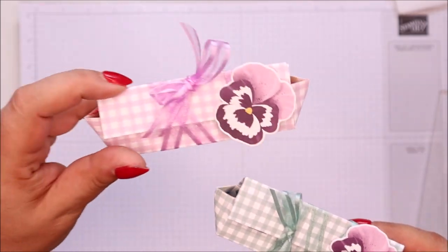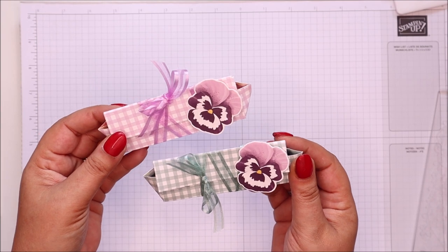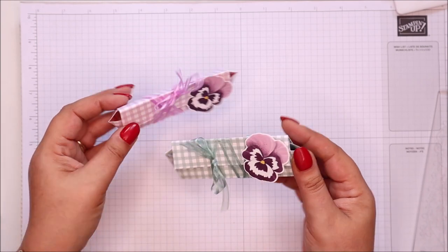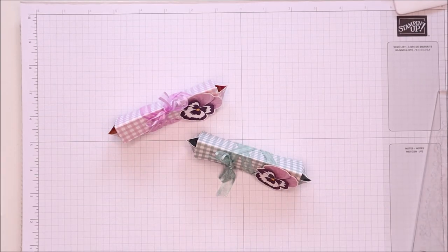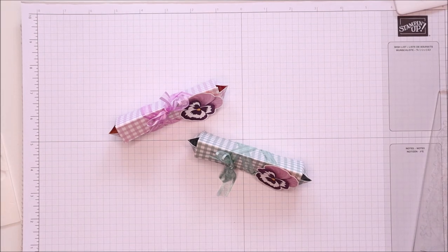So the soft succulent, fresh freesia, both with the blackberry bliss pansy on the front. Adorable. I love them. I hope you like them. Goodness me, is that only 6 minutes 50 seconds? That's speedy even for me. Anyway, thank you ever so much for joining me. Hope to meet you very soon. Bye.